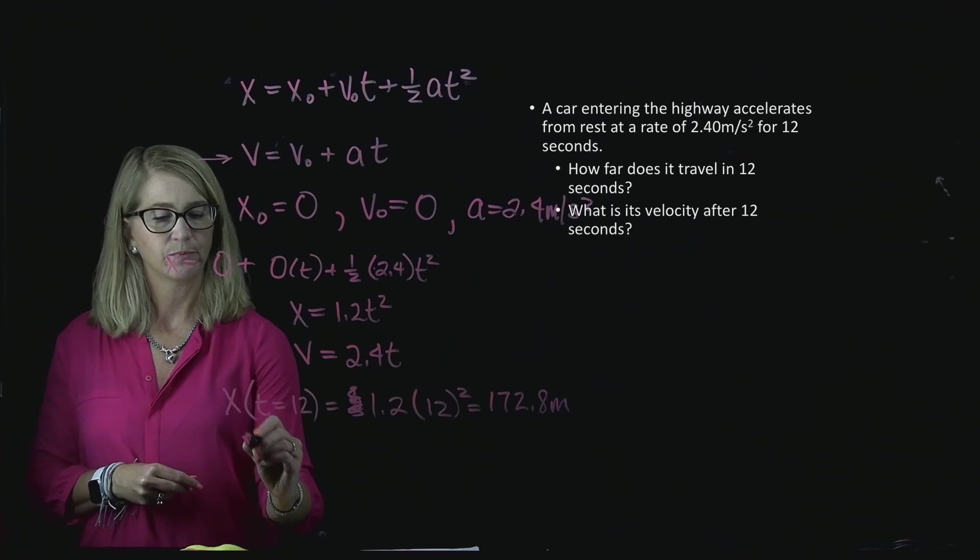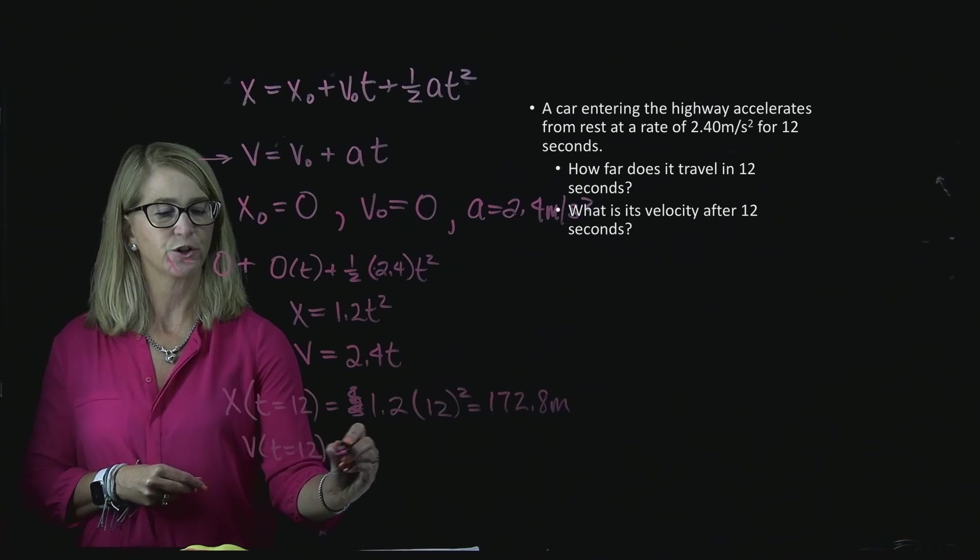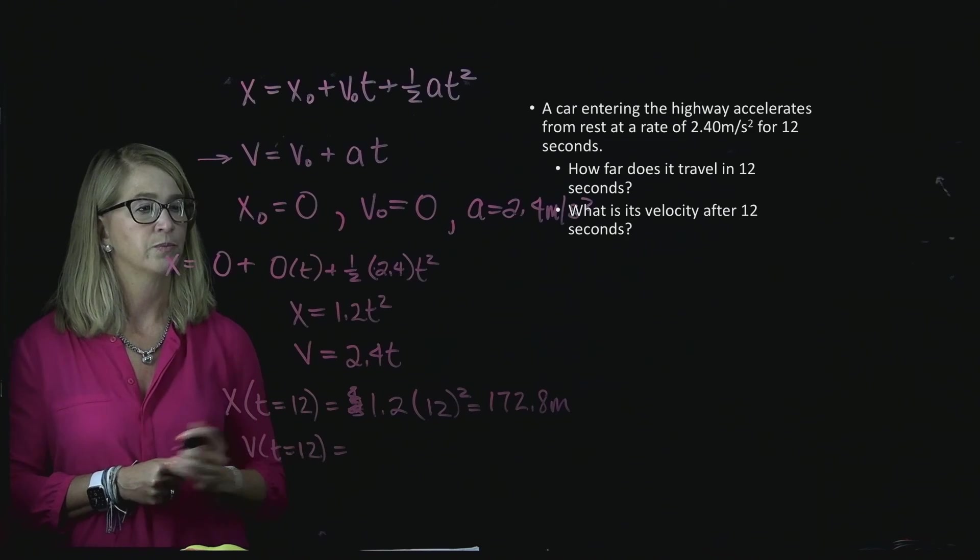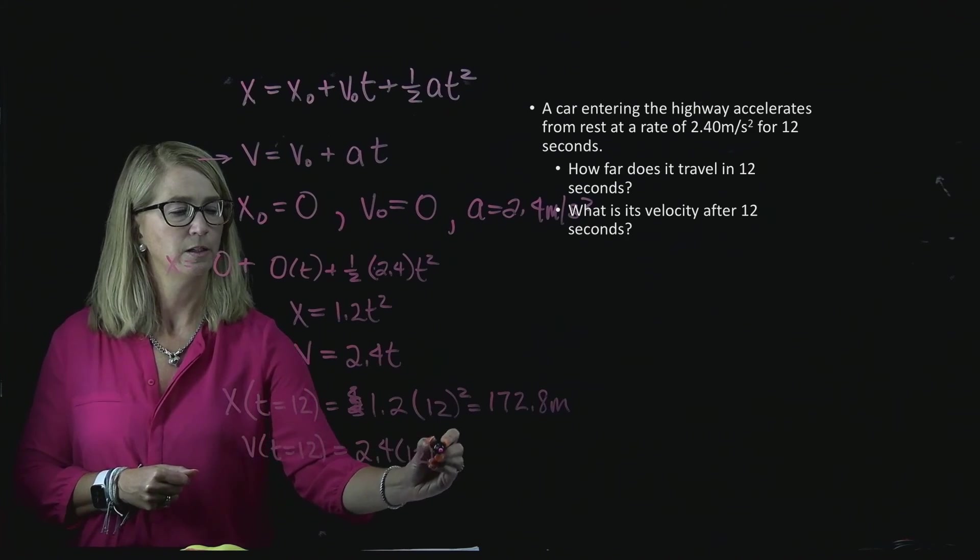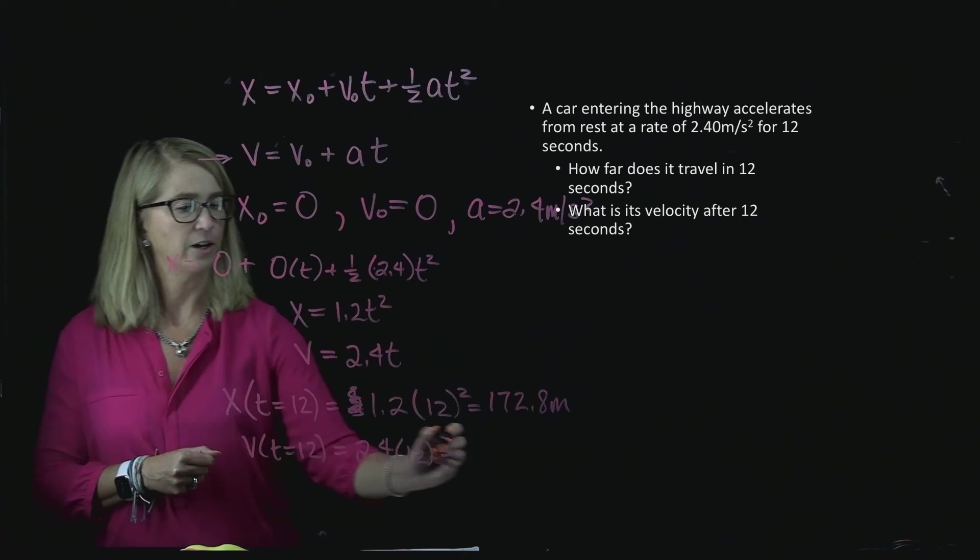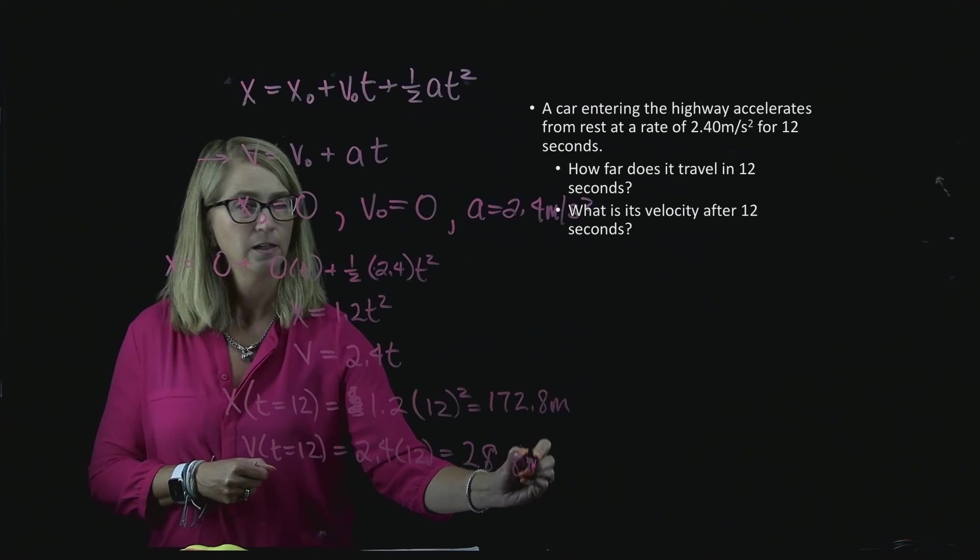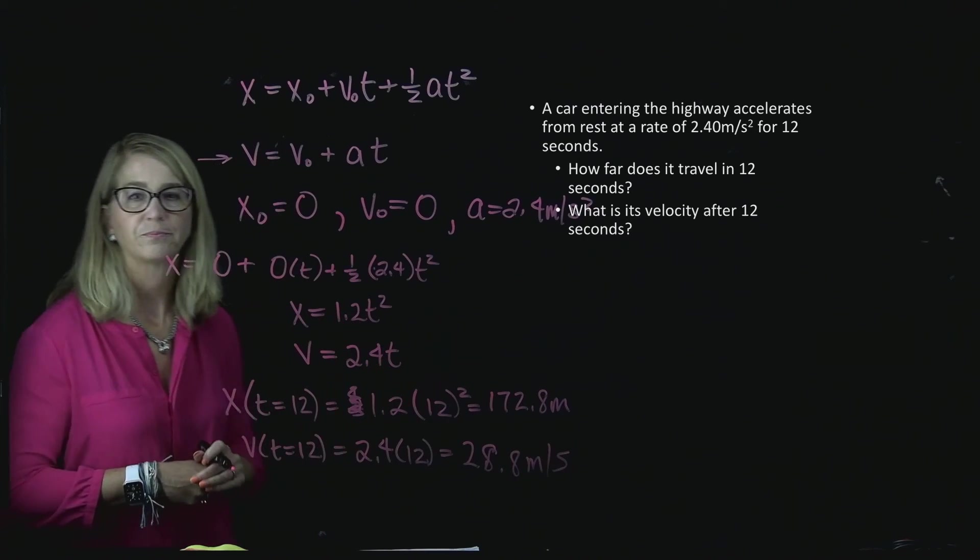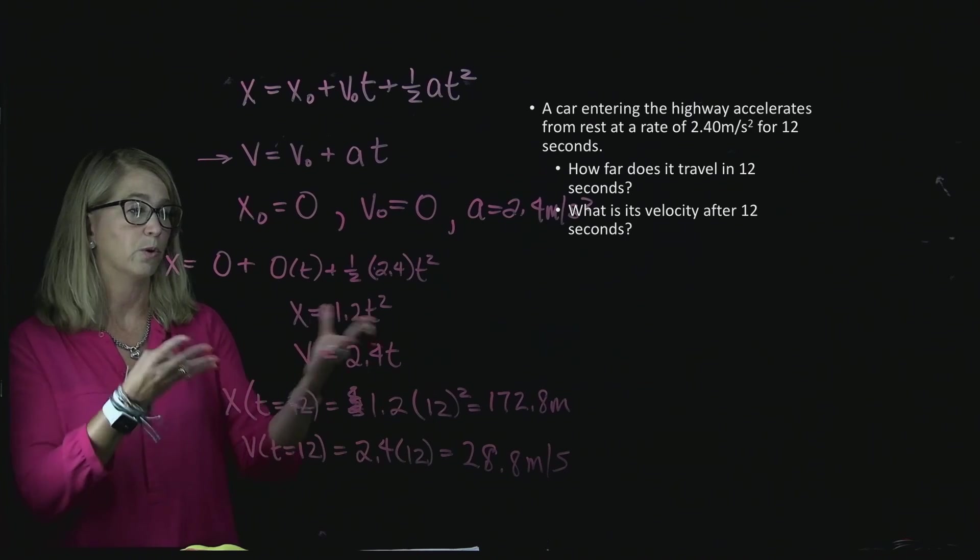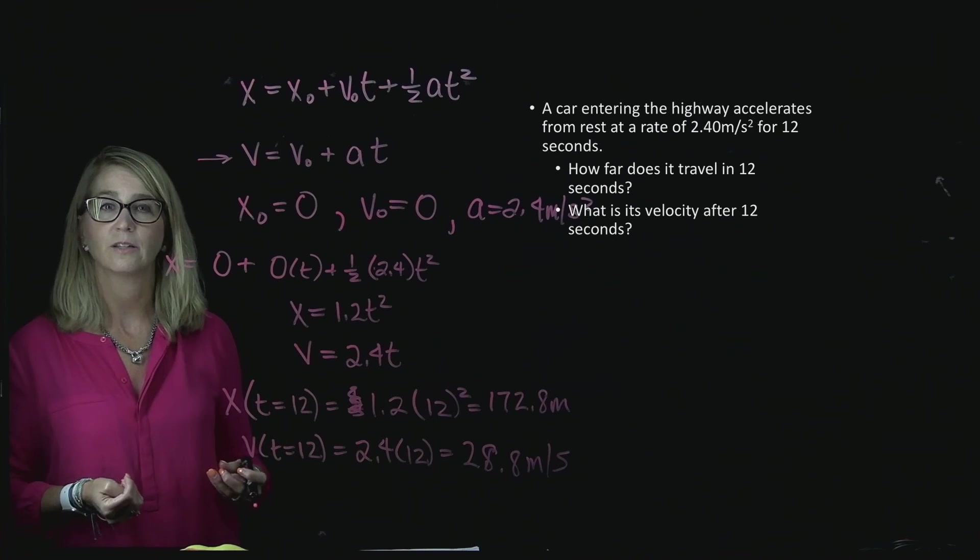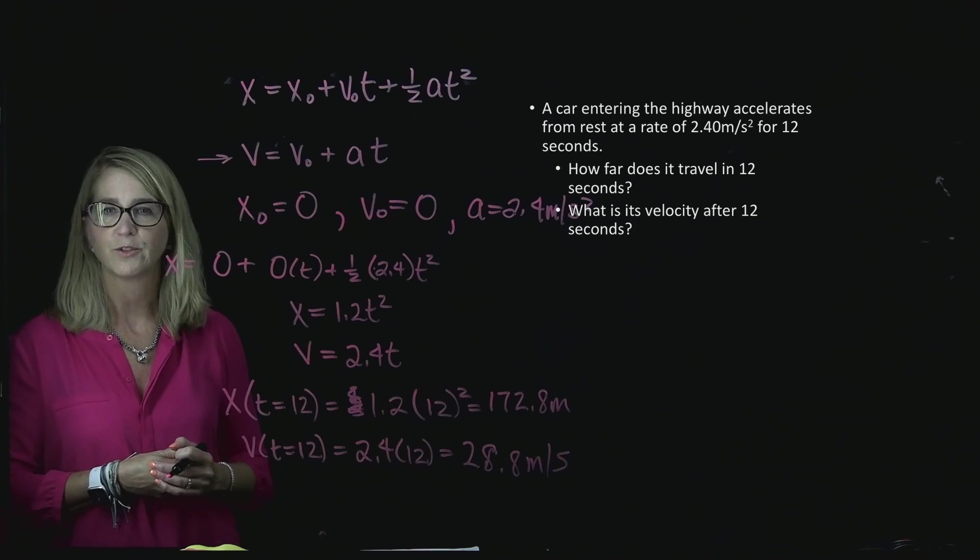For the velocity, I'm thinking of using the velocity expression, but letting t equal 12, and so it's 2.4 times 12. And so, that value for the velocity is 28.8 meters per second. And so, that is how we can find the value for the velocity and the distance, well, how far it traveled, its position, really, at 12 seconds.